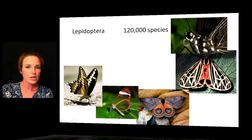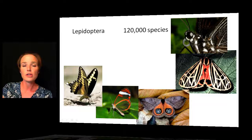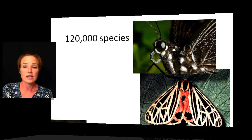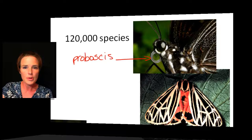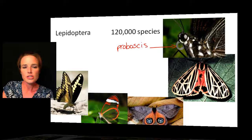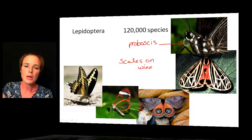Lepidoptera is one of the most recognizable insect orders — the moths and butterflies. This order goes through complete metamorphosis, so the larva stage is a caterpillar and the adult is the familiar butterfly or moth. One significant feature is that they have what's called a proboscis — a long tongue that curls up, which can reach down into flowers to obtain nectar. They also have tiny scales on the wings that rub off when touched.